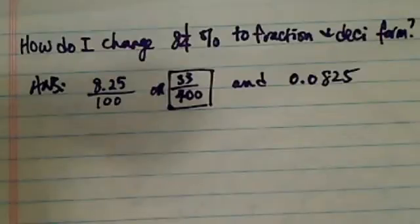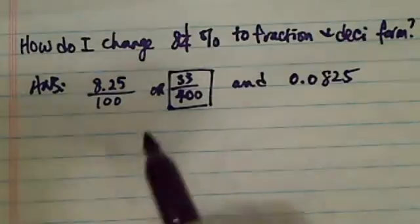The question asks, how do I change 8.25% to fraction and decimal form? The answer is 33 over 400 and 0.0825. So here's how we get it.